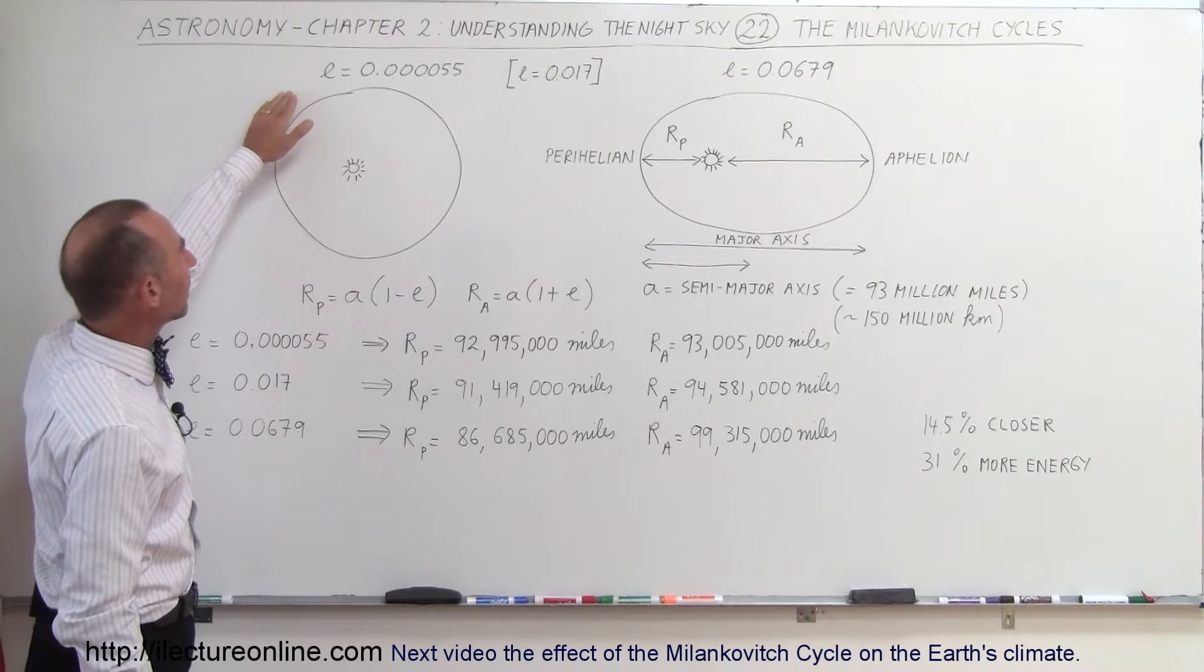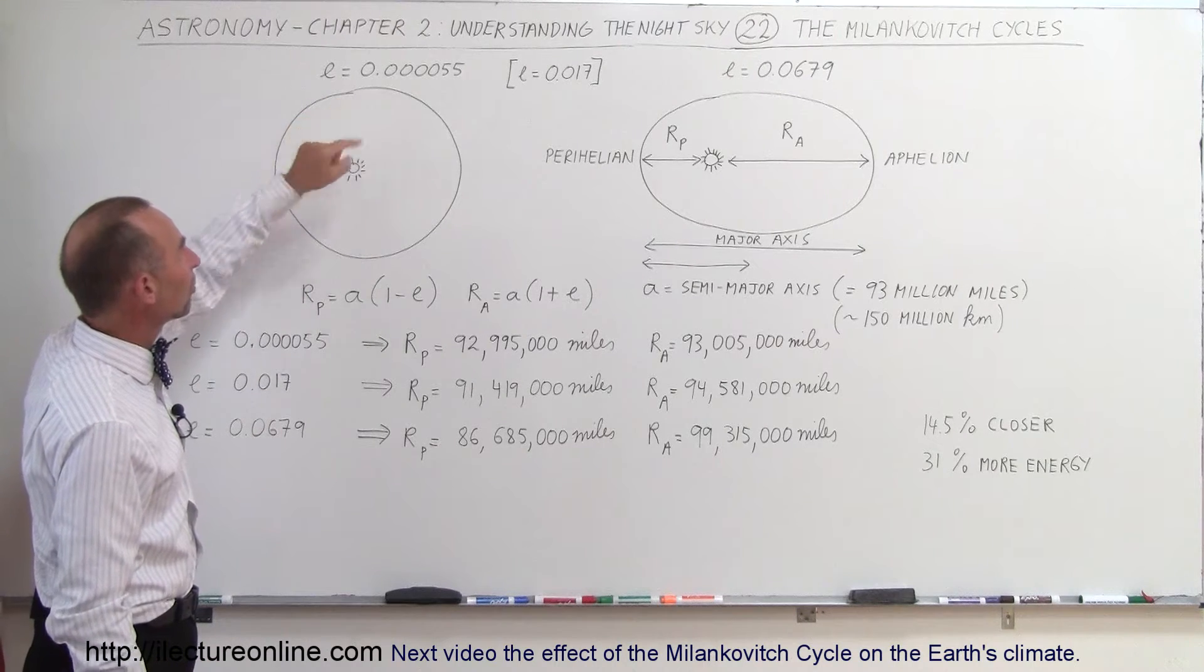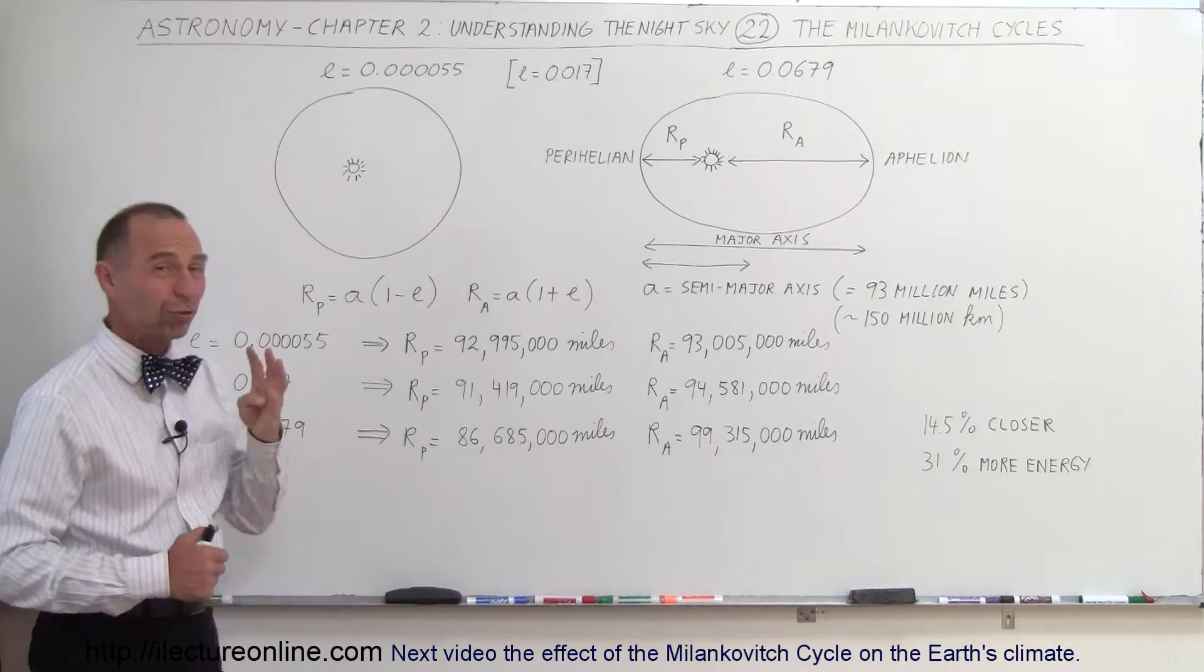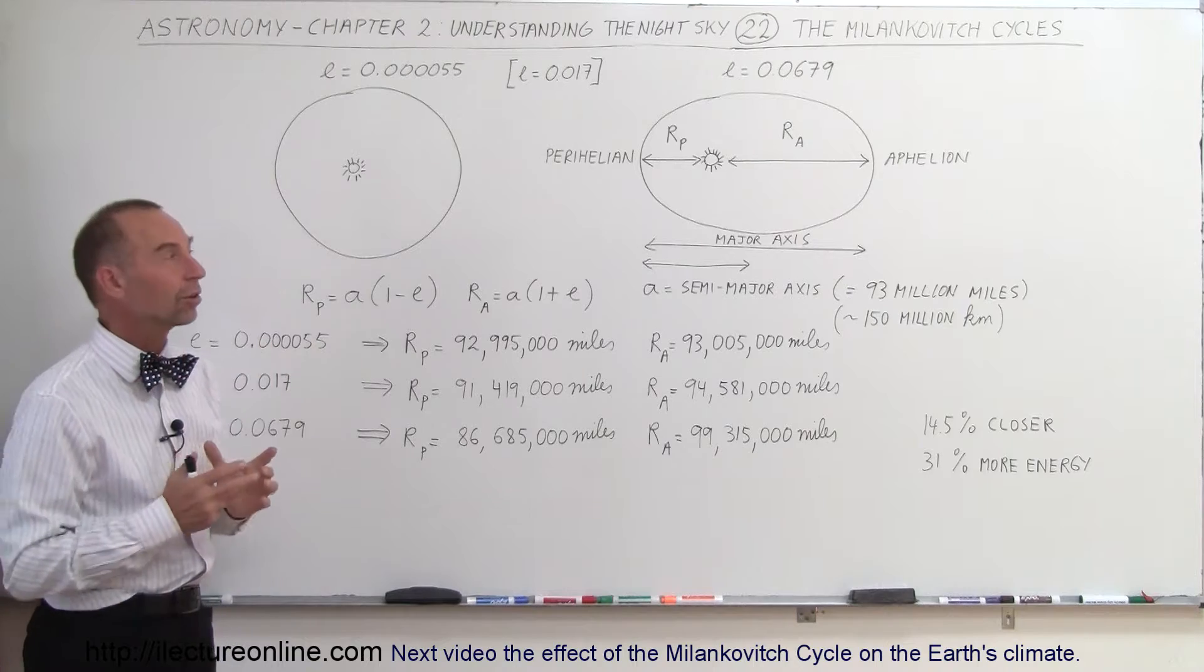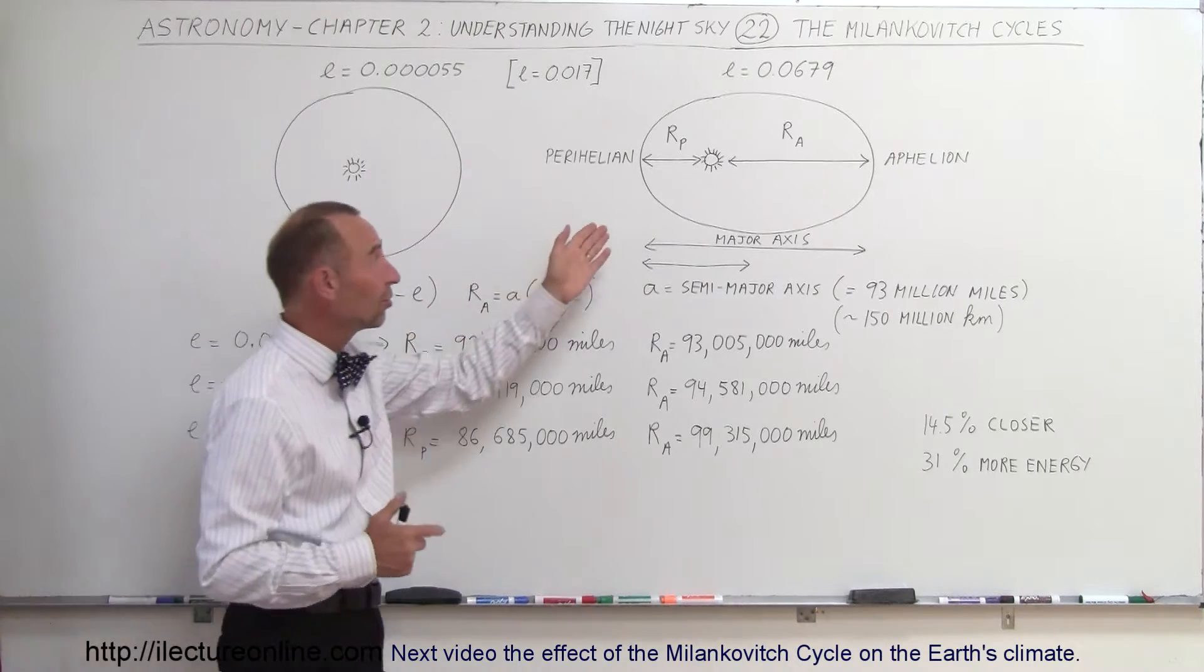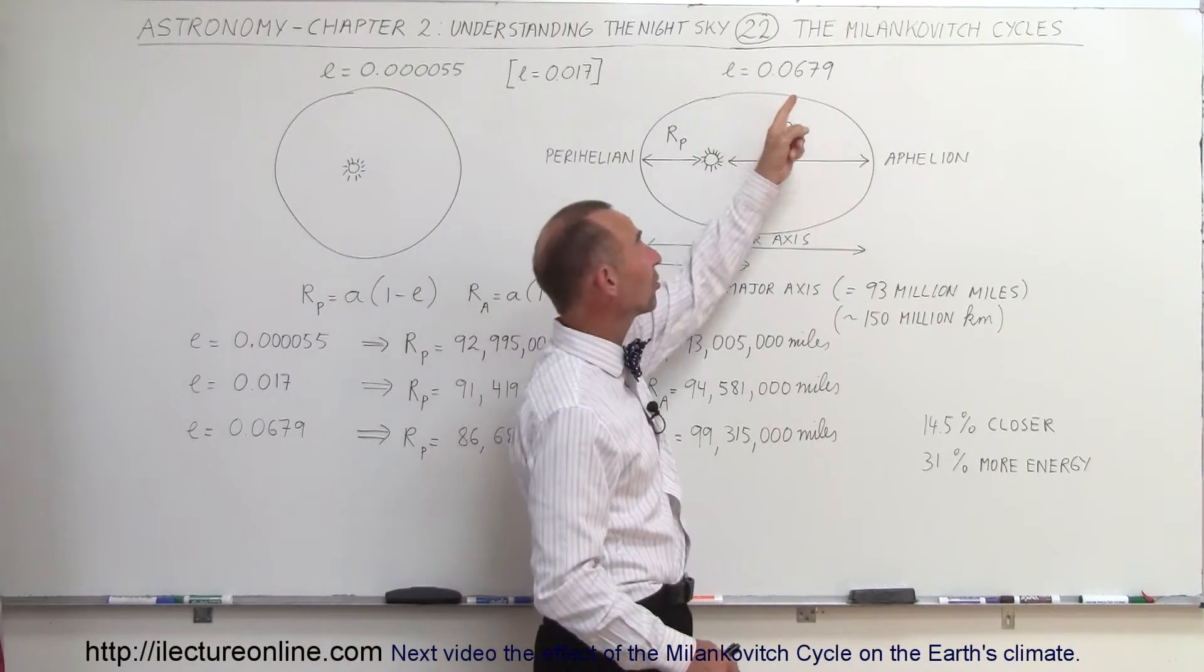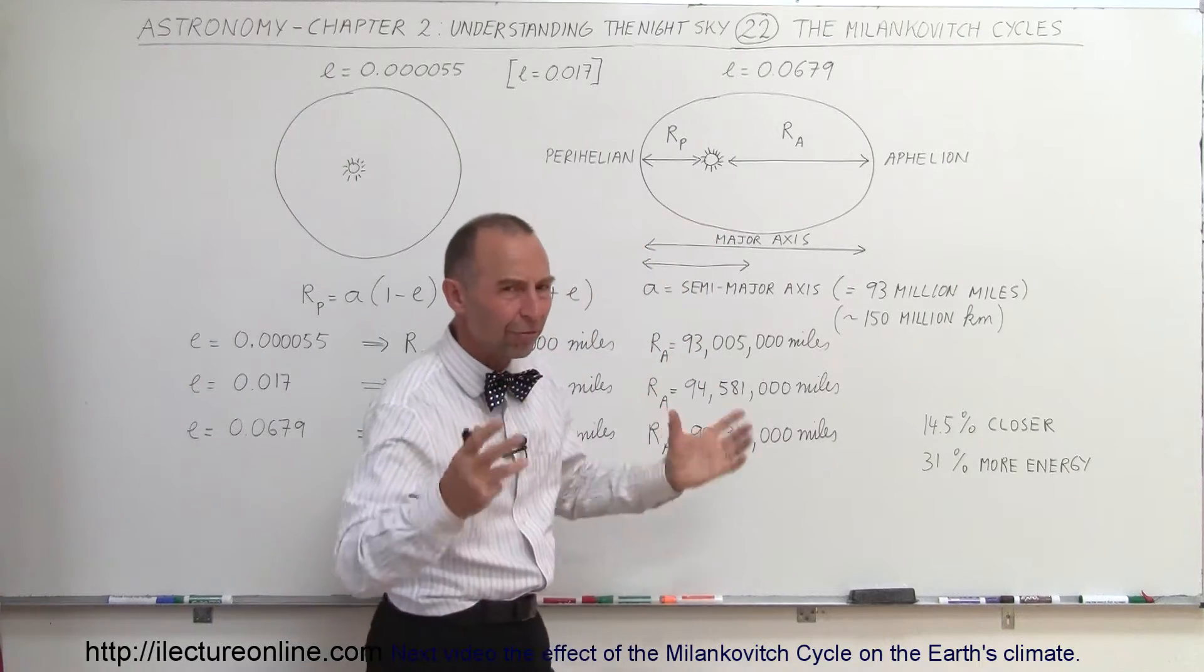The eccentricity here is indicated that sometimes can be as low as 0.00005, which means it's almost perfectly circular, and at other times the eccentricity is quite high at 0.0679, which makes it very elliptical.